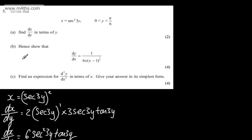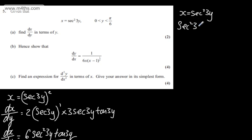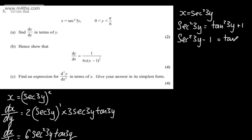In part B for four marks, it says hence show that dy/dx is 1 over 6x multiplied by (x minus 1) to the half. Going back to x = sec squared(3y), using the identity sec squared(3y) = tan squared(3y) + 1, we can say sec squared(3y) minus 1 = tan squared(3y), so x minus 1 = tan squared(3y).